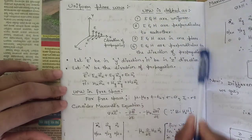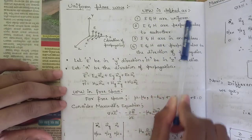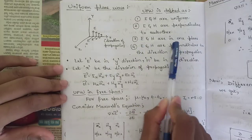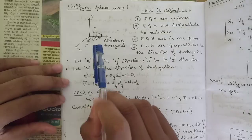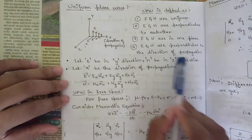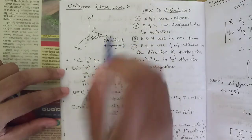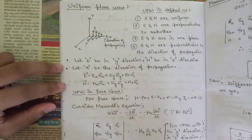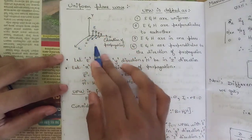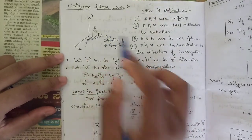The definition of a uniform plane wave covers four points: first, electric field intensity and magnetic field density are uniform in nature; second, E and H are perpendicular to each other; third, E and H lie in a single plane; fourth, E and H are perpendicular to the direction of propagation. In the figure, the arrows indicate directions of propagation. Let E be in the y-direction, H in the z-direction, and x be the direction of propagation.